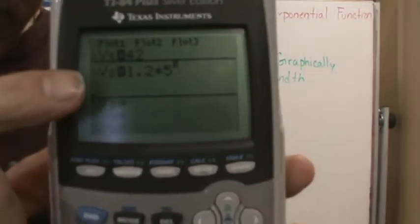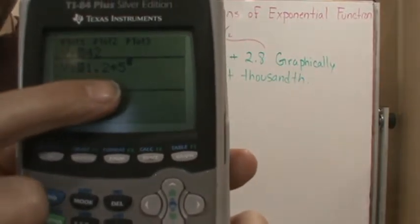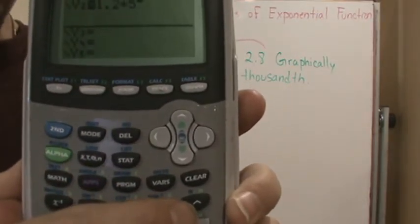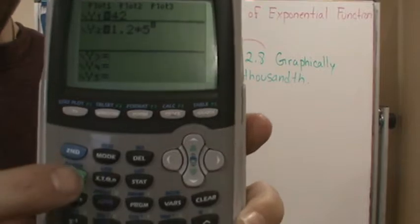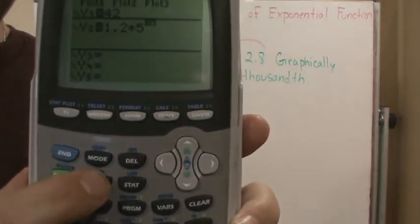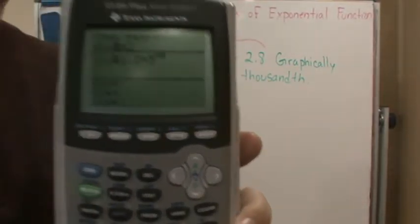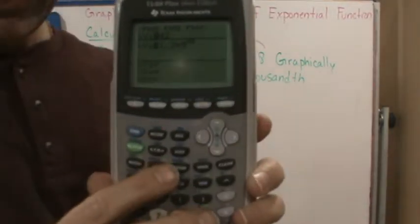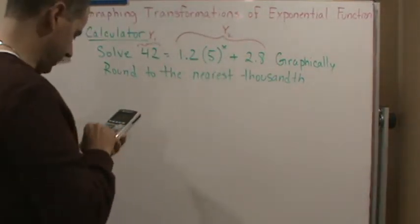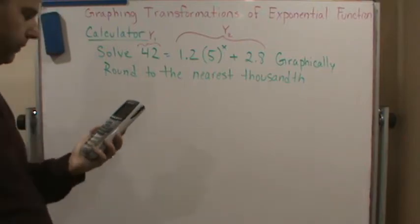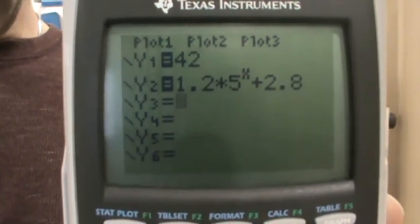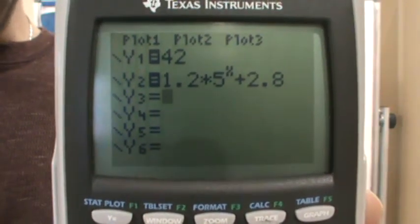For Y2, I type 1.2, then multiply by 5. I hit the caret key to enter the exponent, and to put x in the exponent I hit the variable key — which inserts x depending on what mode you're in. To get out of the exponent, just press the arrow key to move back down. Then I add 2.8 and hit Enter. Now I have both equations entered and I'm ready to graph.